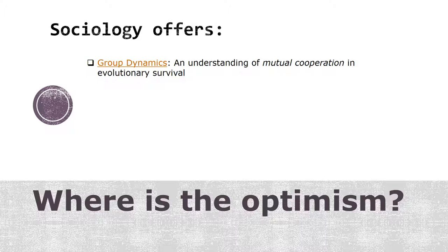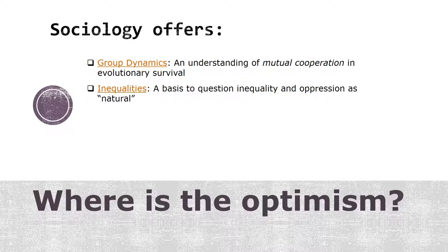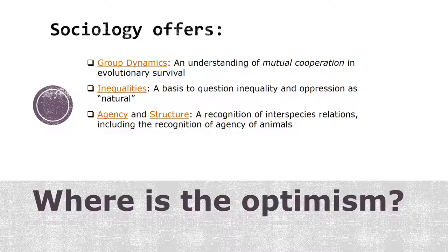So where is the optimism? Let's summarize this chapter. First of all, sociology studies group dynamics. The mutual cooperation that is needed for species to survive is basically group dynamics, and what sociologists understand about dynamics can help create better systems of cooperation. Sociology studies inequalities. While these inequalities are mostly looking at human-to-human relationships, sociologists can show how human impacts on other species take the form of oppression, and that oppression can be addressed in the same way that human-on-human oppression is addressed. Sociology studies structure and agency. This provides a basis for understanding how humans and other animals — even plants — interact with each other, providing a basis for seeing other species as having agency of their own.